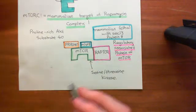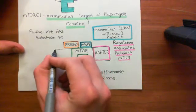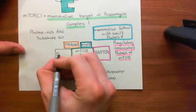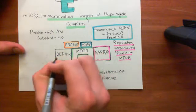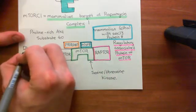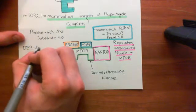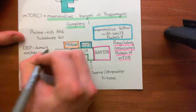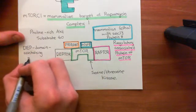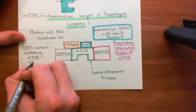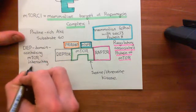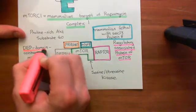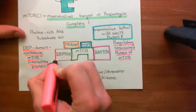That's another member of mTORC1. The final protein bound to mTORC1 is abbreviated as DEPTOR. DEPTOR stands for the DEP domain containing mTOR interacting protein. This is another protein associated with mTOR in mTORC1, and we'll colour this one in red.